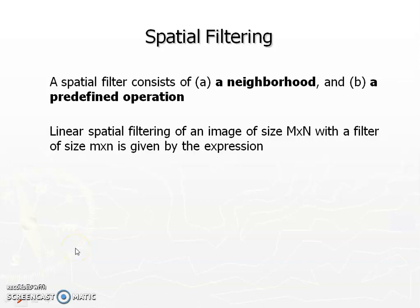Let us look into spatial filtering with neighborhood processing. In neighborhood processing, the value of the pixel in the output image at a given location x, y will depend not only on the pixel value of the input image at that location x, y, but also its neighbors — a 3x3 neighborhood or a 5x5 neighborhood.